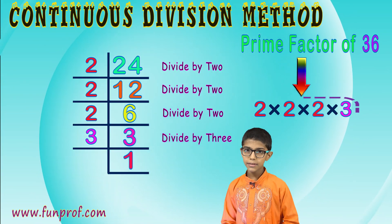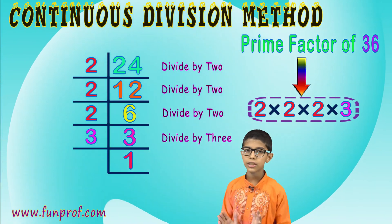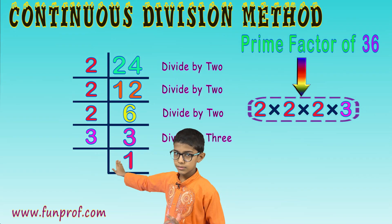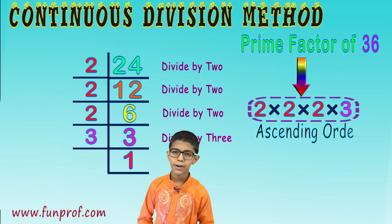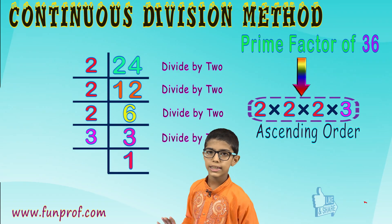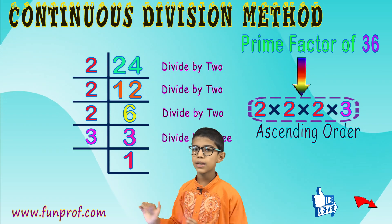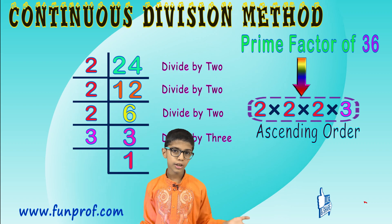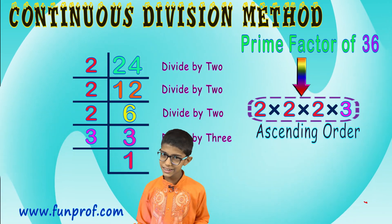In the continuous division method, you will always get the factors in ascending order automatically — you don't need to arrange them. But in the factor tree method, you may need to arrange them in order. Bye!